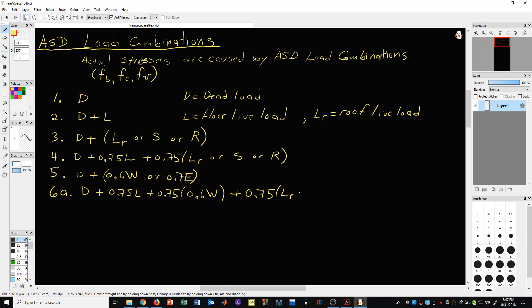Roof live or snow or rain. Then, of course, we're going to have combination 6b where we have dead plus 0.75 L plus 0.75 times 0.7 E plus 0.75 snow.